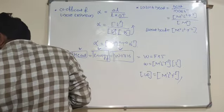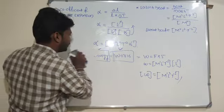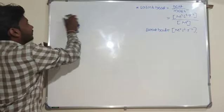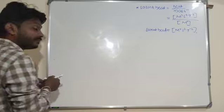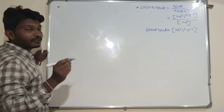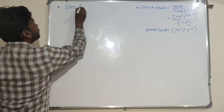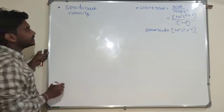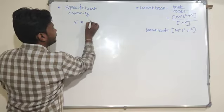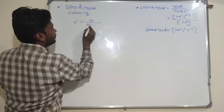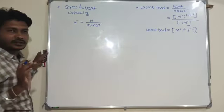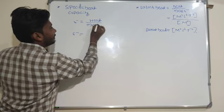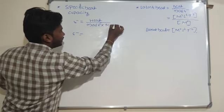Now let me write the dimensional formula for one more physical quantity — specific heat capacity. The formula is S equal to Q divided by M into delta T, meaning heat divided by mass into temperature.